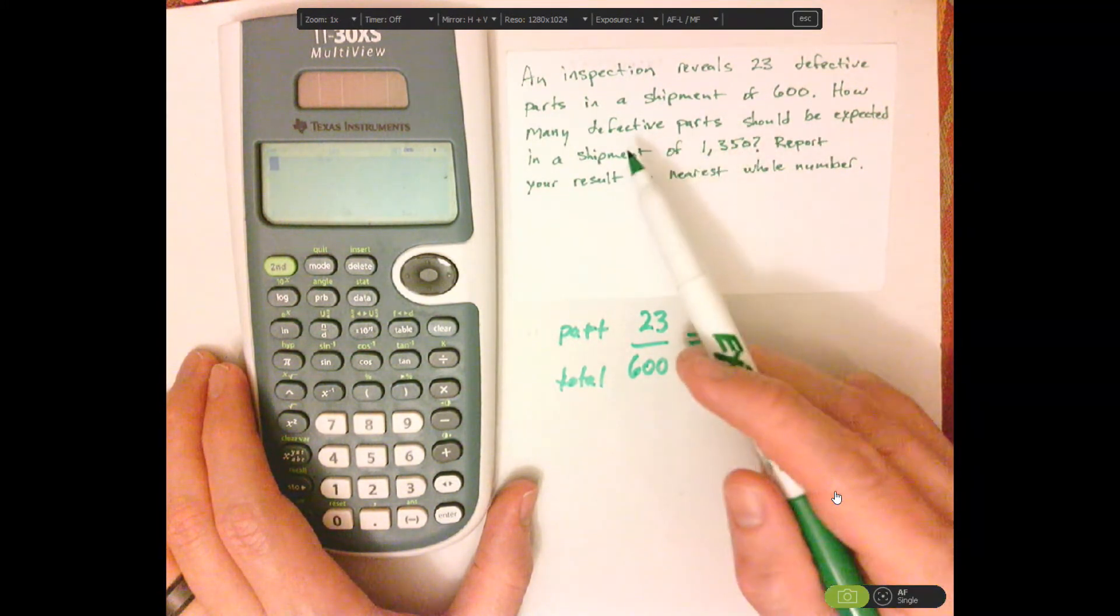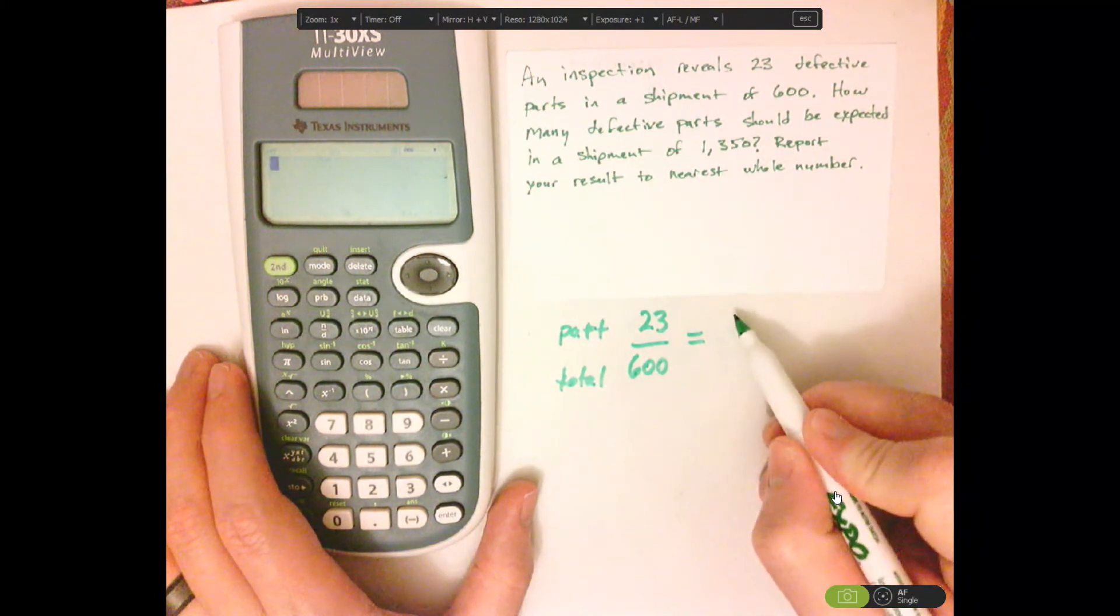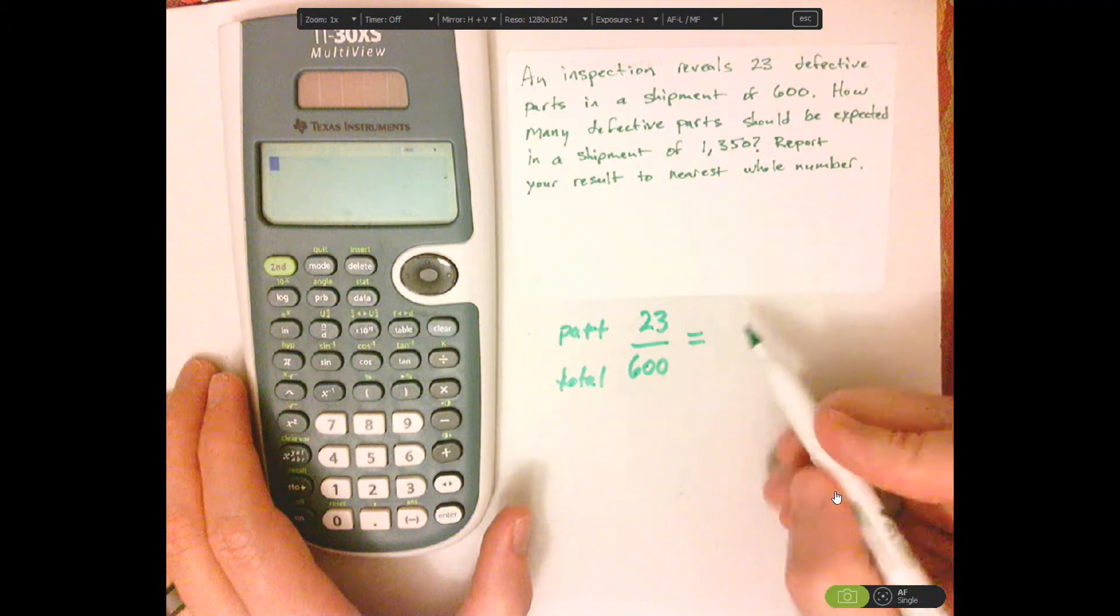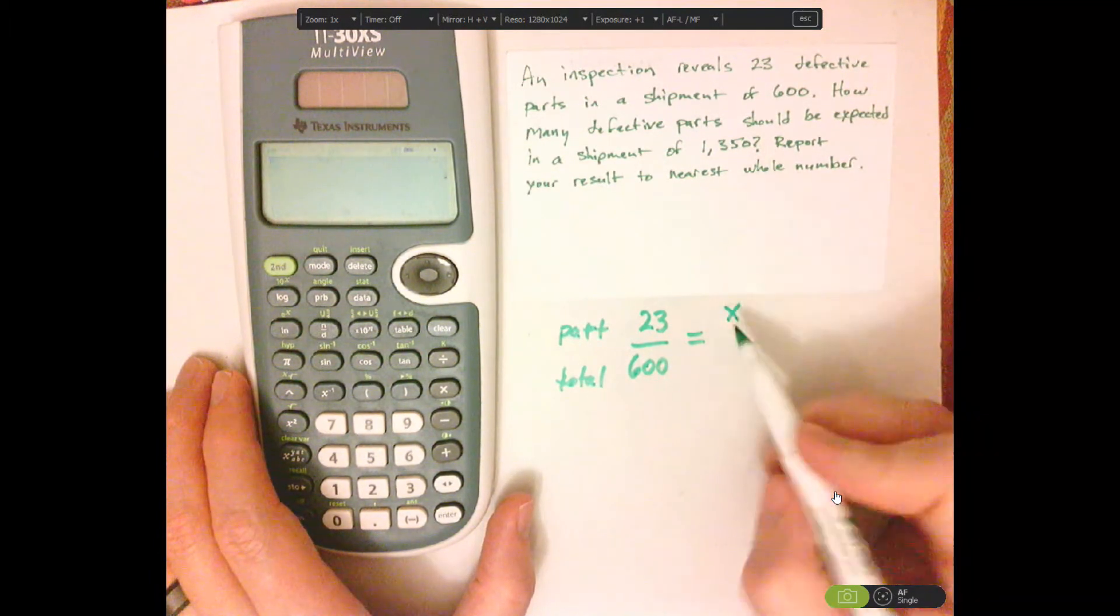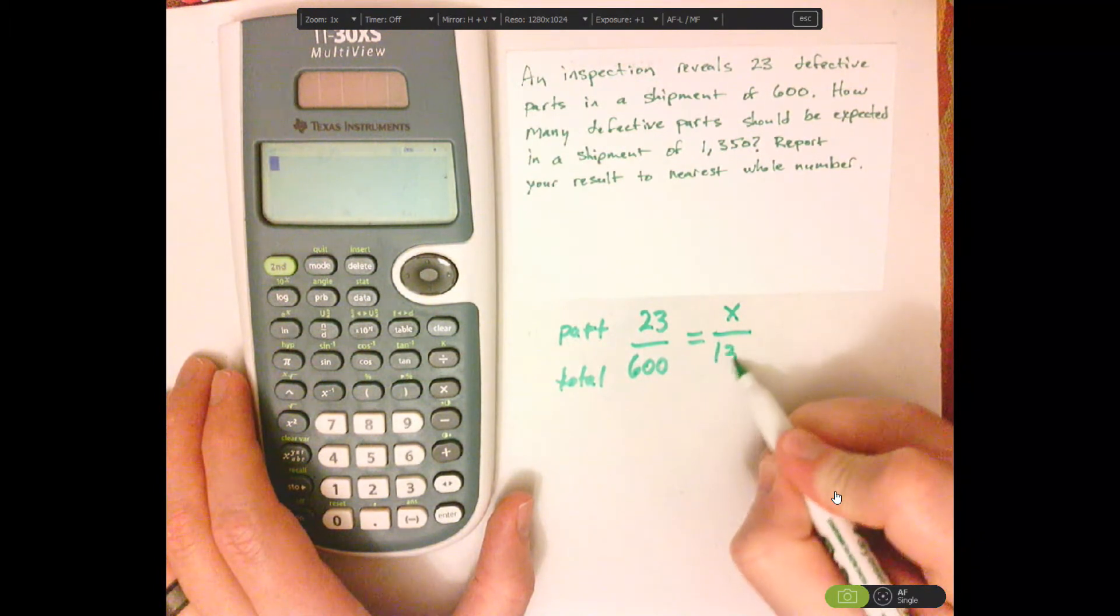Now, we're looking for the defective parts. Part of the total would be what we're looking for. So that would be X, and that would be out of 1,350.